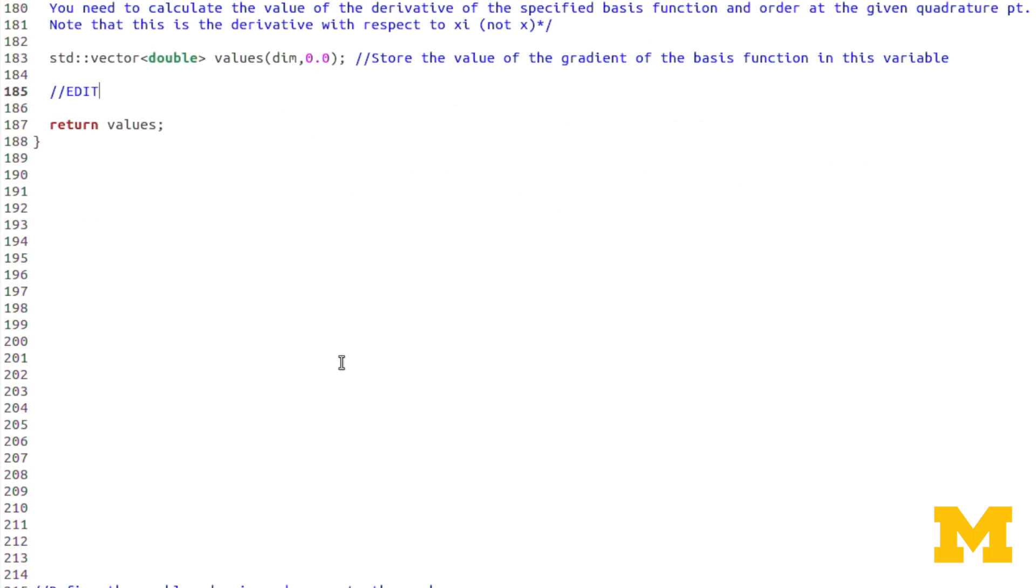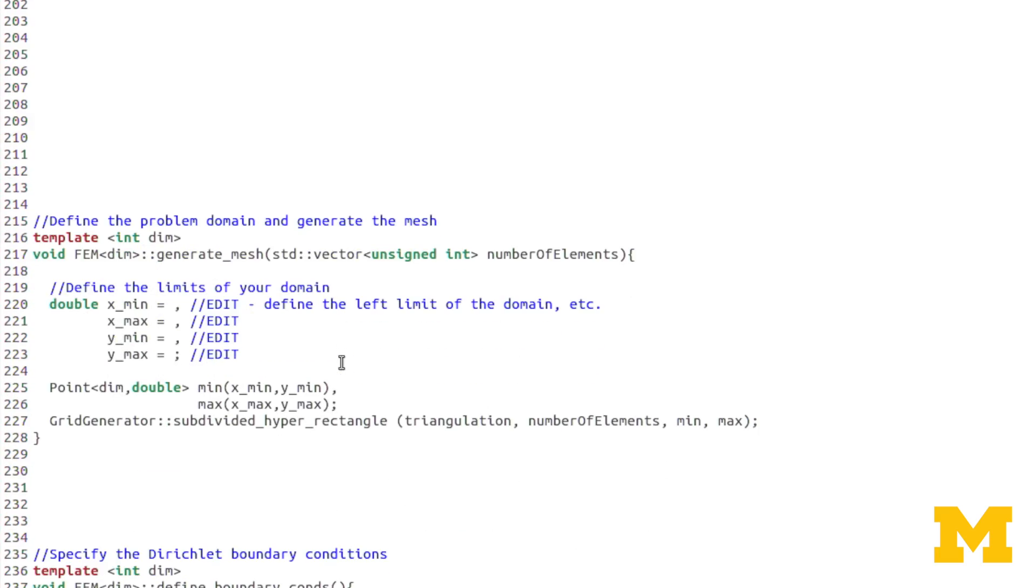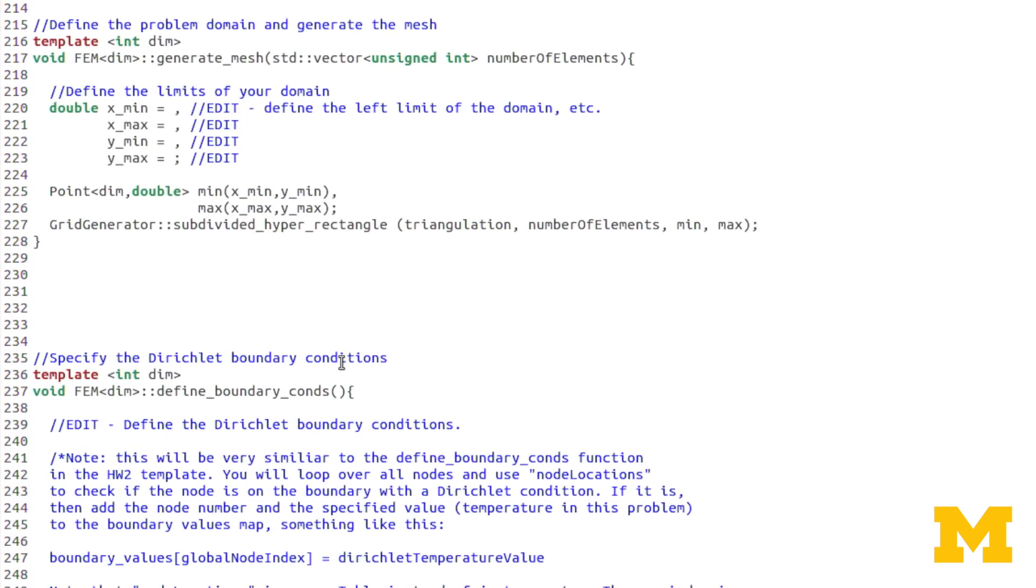So in this case, remember we need to use the deal 2 basis function node numbering. Because we are using deal 2's mesh, we're using deal 2's connectivity, matrices, and so on. So remember to use deal 2's node numbering as you're creating your basis function and the gradients of the basis function.